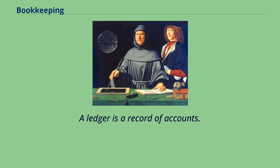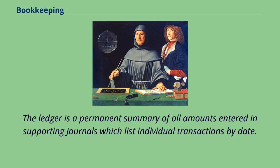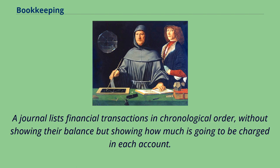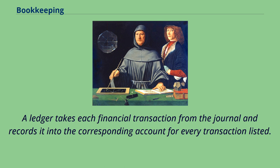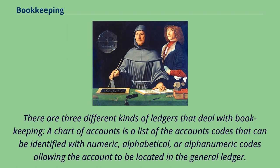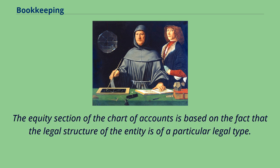A ledger is a record of accounts. The ledger is a permanent summary of all amounts entered in supporting journals which list individual transactions by date. These accounts are recorded separately, showing their beginning and ending balance. A journal lists financial transactions in chronological order, without showing their balance but showing how much is going to be charged in each account. A ledger takes each financial transaction from the journal and records it into the corresponding account for every transaction listed. The ledger also sums up the total of every account, which is transferred into the balance sheet and the income statement. There are three different kinds of ledgers that deal with bookkeeping. A chart of accounts is a list of the account codes that can be identified with numeric, alphabetical, or alphanumeric codes allowing the account to be located in the general ledger. The equity section of the chart of accounts is based on the fact that the legal structure of the entity is of a particular legal type.